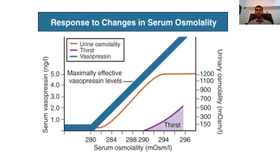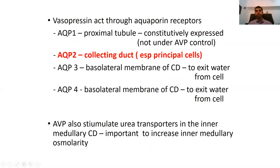A graph depicts what happens with osmolality changes. At normal osmolality around 280–290, as osmolality goes up, vasopressin or antidiuretic hormone levels start going up because the body is trying to preserve more water to minimize osmotic shifts. As a result, urine osmolality goes up — more water is reabsorbed by the tubules, urine gets concentrated, and urine output reduces. Vasopressin acts mainly through aquaporin-2 receptors in the collecting duct, reabsorbing more water and resulting in oliguria.